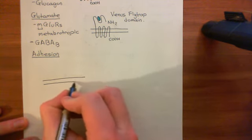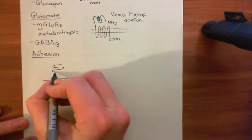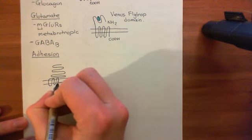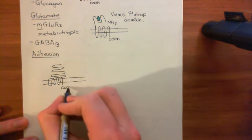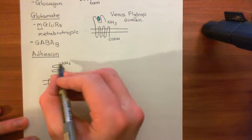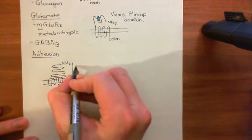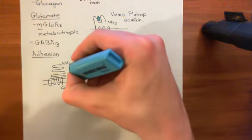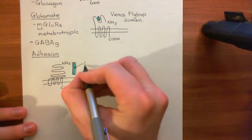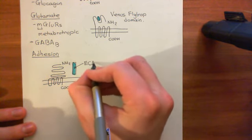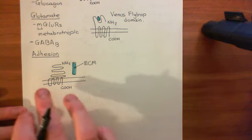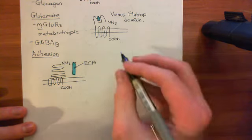If I draw the plasma membrane in here, you have a large amino terminal domain which is going to interact with the extracellular matrix. Then you have the seven membrane-spanning alpha helices, and then the carboxylic acid group inside. This large amino terminal domain will interact with components of the extracellular matrix — I'll label this ECM, short for extracellular matrix. All members of the adhesion family of G-protein coupled receptors have large amino terminal domains so that they can interact with components of the extracellular matrix.